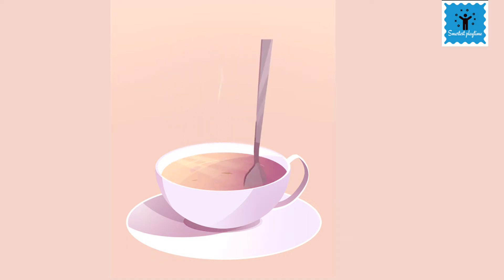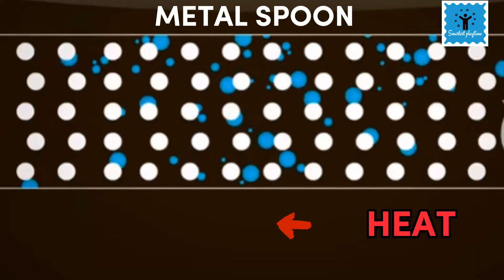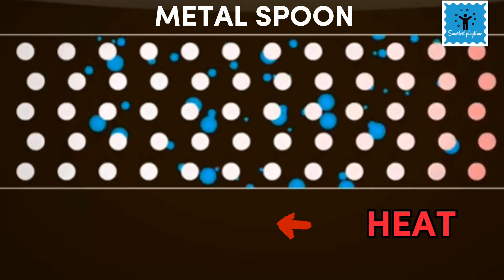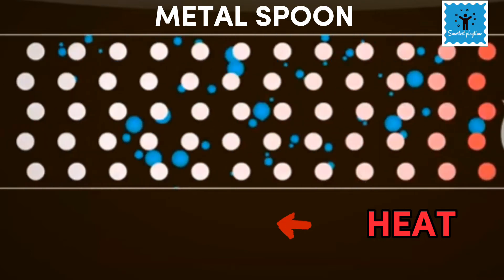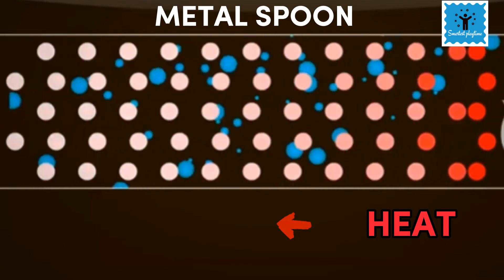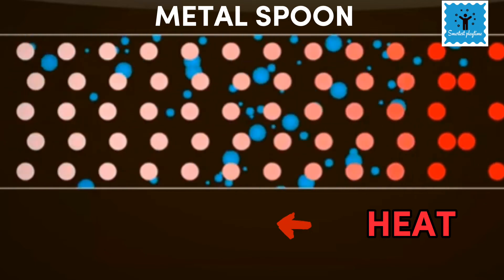In this case, the tea is hot and the metal spoon is cold. When you put the metal spoon into the hot tea, some of the heat energy from the tea is transferred to the metal particles. The metal particles start to vibrate faster and collide with their neighboring particles, transferring some of the heat energy along.